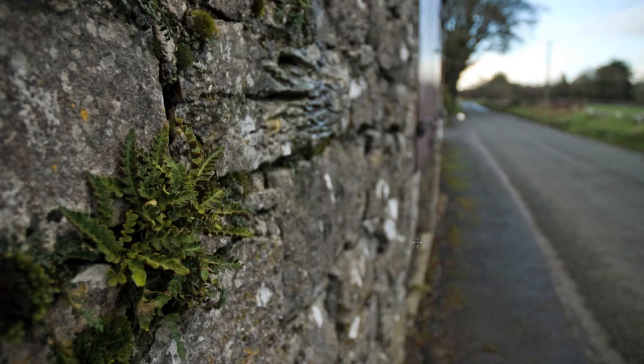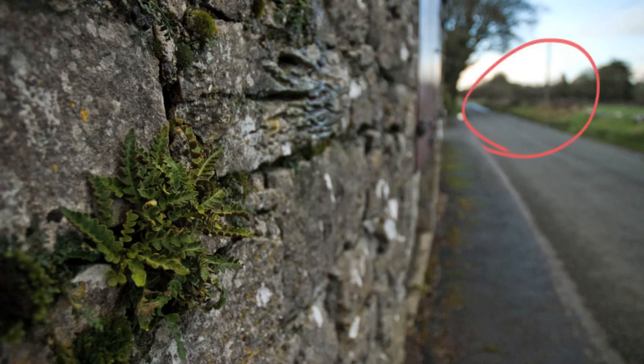Have you ever wondered what makes some images have really blurry backgrounds and others not? In this image, I made a background that's really blurry while the foreground has a very small area in focus. I wanted to focus on this little fern sticking out of a barn wall, and I did this by setting an aperture that would allow me to do that.